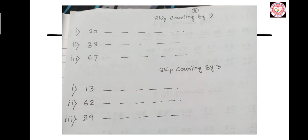The following sums are for you to practice at home. Skip counting by 2: Number 1 — after 20, which 5 numbers come? Number 2 — after 38, which numbers come? Number 3 — after 67, which number comes? Skip counting by 3: Number 1 — after 13, which numbers come? Number 2 — after 62, which numbers come? Number 3 — after 29, which numbers come?